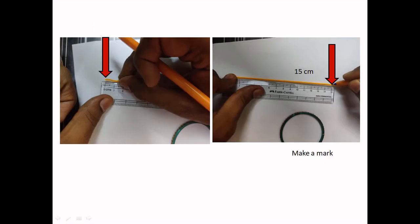After making a mark we need to take the thread and keep it in the centimeter scale from the 0 starting, and if it is more than that of 15 centimeters again make a mark in the 15 centimeters. So this is the first mark.